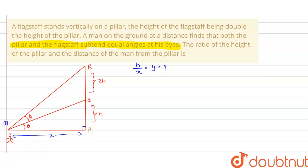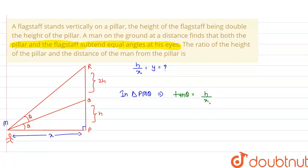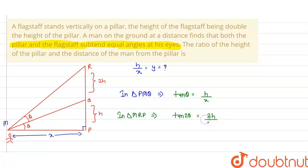In triangle PMQ, tan θ will be equal to the height h upon base x. In triangle MRP, tan 2θ is equal to the total height upon the base — that is 3h upon x.